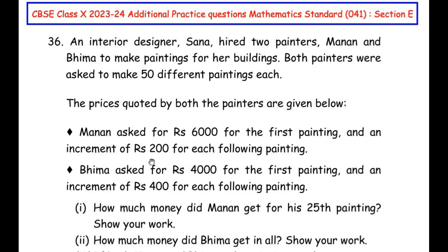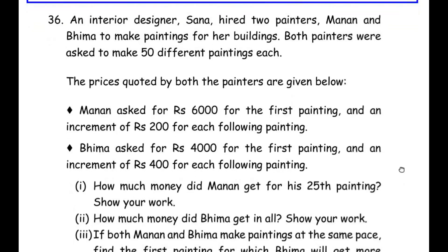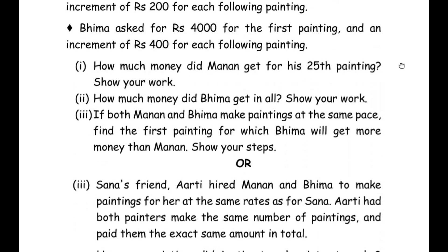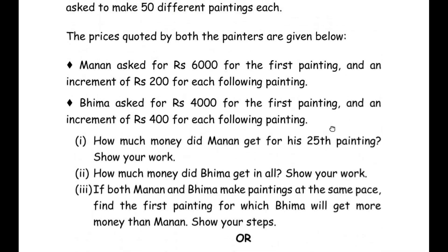This question is from the arithmetic progression chapter and has three sub questions. The third sub question also has an OR option where you can choose either of the two. The first sub question is of one mark, second sub question is of one mark, and third sub question is of two marks. So let us start solving this example.